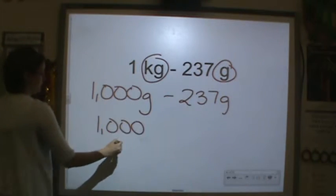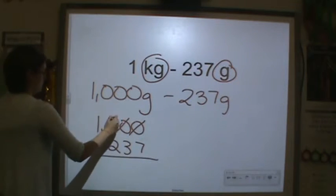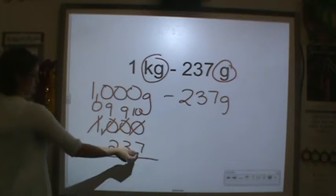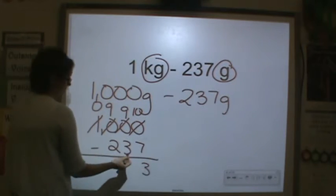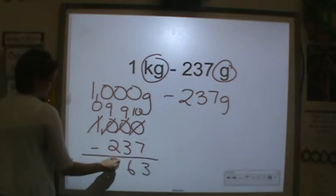I'm going to do this vertically because we're going to have to do some regrouping. 7 from 10 is 3. 3 from 9 is equal to 6. 2 from 9 is equal to 7.